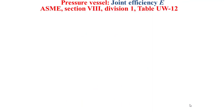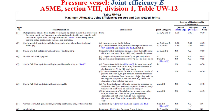Now let's explain how to determine the joint efficiency E. Based on ASME Section 8 Division 1, Table UW-12 — shown here — based on the weld joint description we can understand the limitations, the allowed joint categories, and in particular we can determine the joint efficiency E based on the degree of radiographic examination of the weld joint: full, spot, or none.